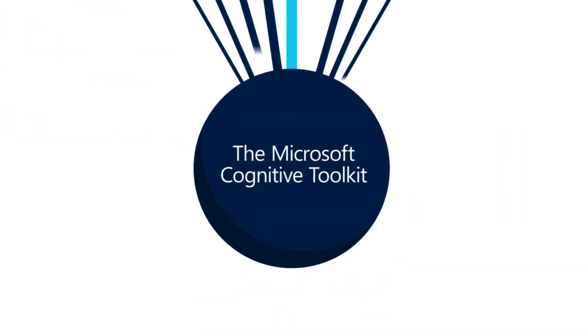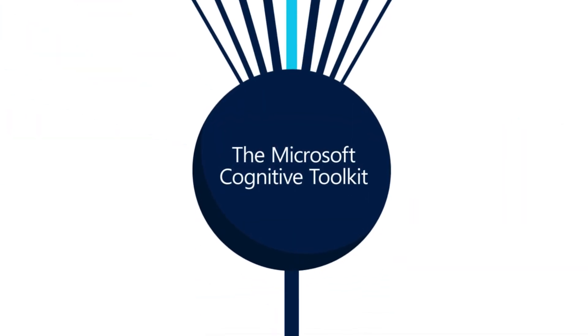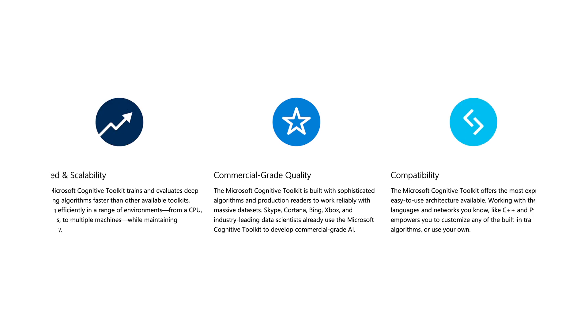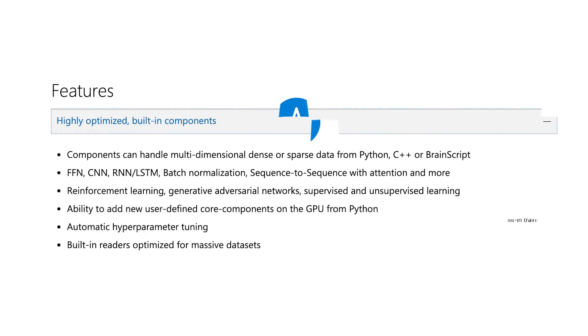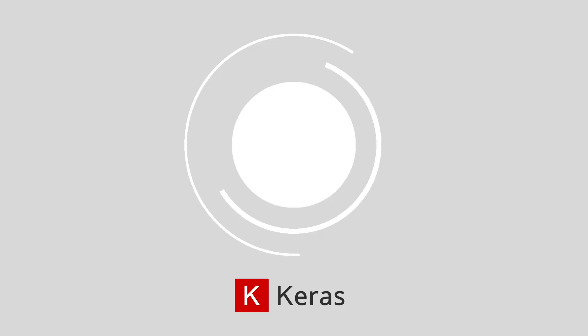At number 4: Microsoft Cognitive Toolkit. The Microsoft Cognitive Toolkit is an AI open source solution intended to help businesses take their ML projects to the next level. This advanced system is ideal for training deep learning algorithms and recurrent neural networks. Among its exciting features are highly advanced components that can handle data from C++ and others.